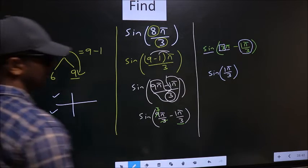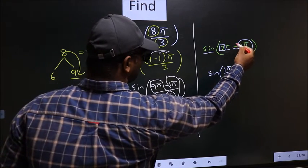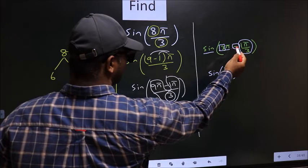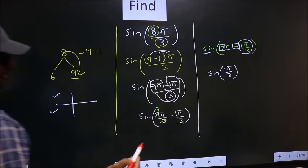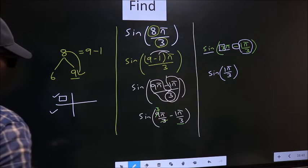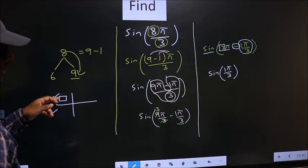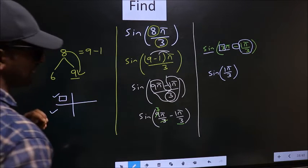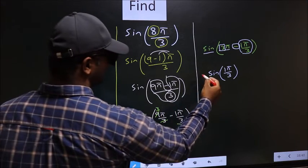Here we have negative. That means angle lies in the 2nd quadrant. And in the 2nd quadrant, sin is positive. So here you take plus.